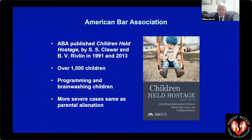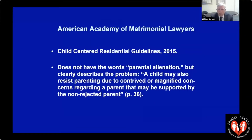The American Bar Association published the famous book 'Children Held Hostage' by Clawar and Rivlin, in which they evaluated a thousand children and described alienation — calling it programming and brainwashing — whose definitions overlap with our definition of parental alienation. The American Academy of Matrimonial Lawyers' guidelines similarly describe it: 'A child may also resist parenting due to contrived or magnified concerns regarding a parent that may be supported by the non-rejected parent.'